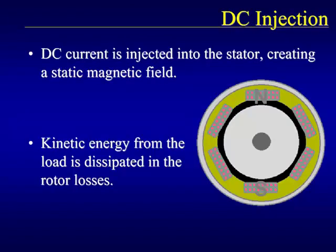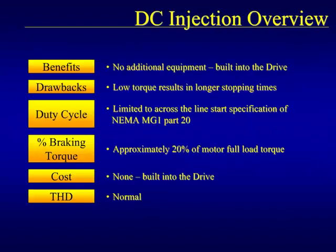The simplest form of braking is DC injection. DC injection works by sending DC current into two phases of the motor. This DC current causes a static magnetic field to occur, which attempts to lock the rotor in a fixed position. During the braking process, all of the kinetic energy from the load is transferred into rotor losses, most notably heat in the rotor. One of the greatest benefits of DC injection is that the function is built into the drive — no additional components are required, preventing any additional cost when using this braking method.